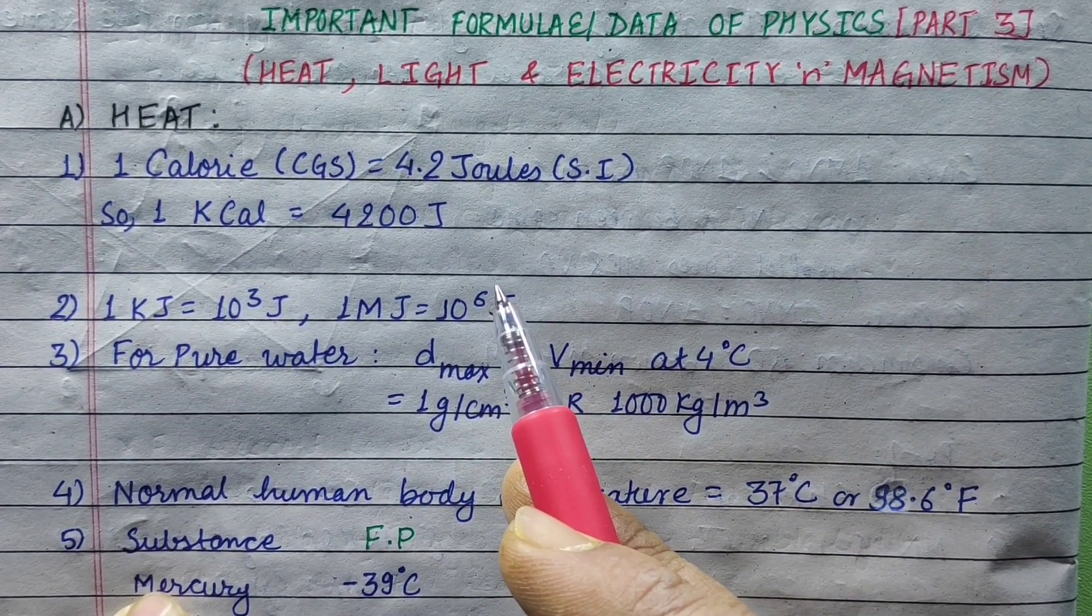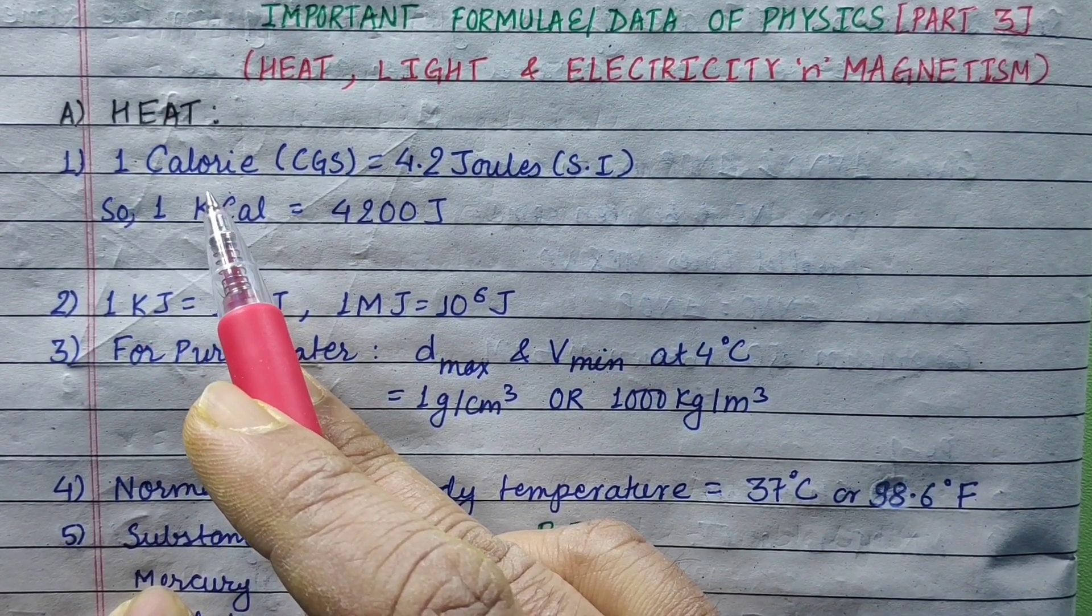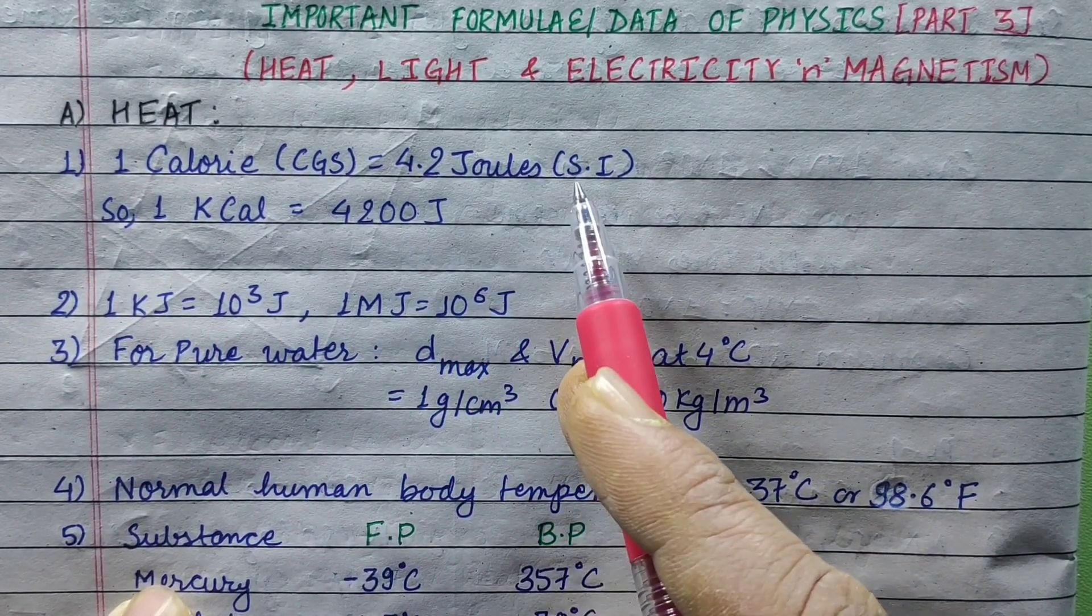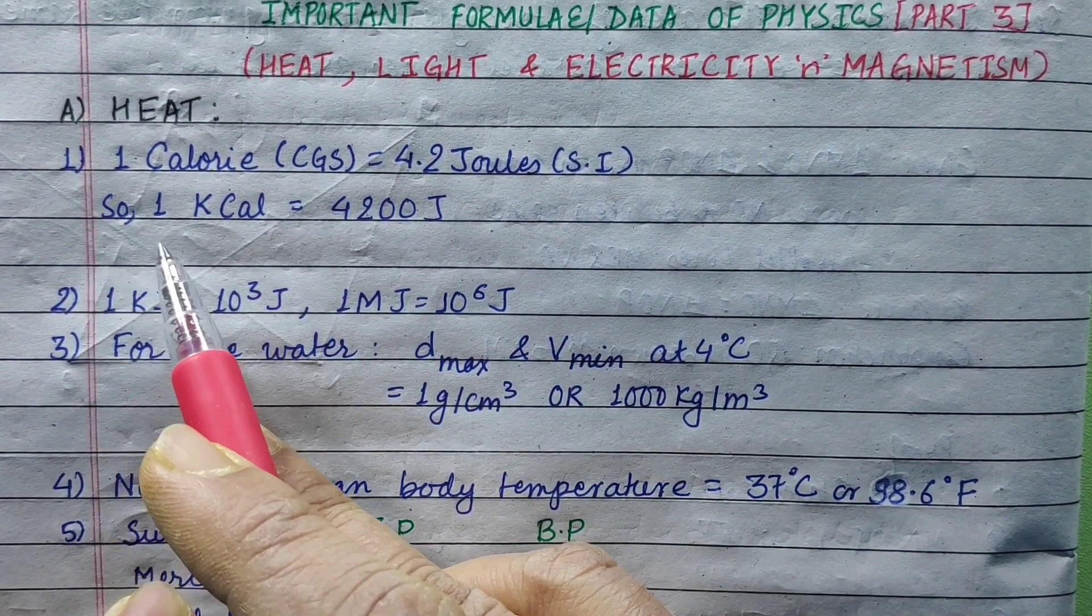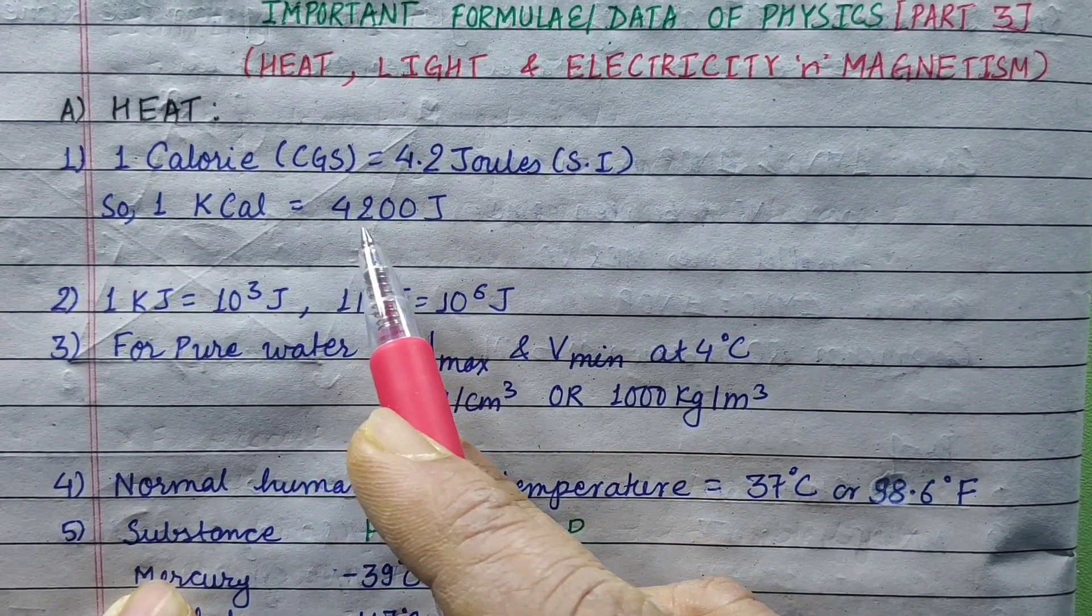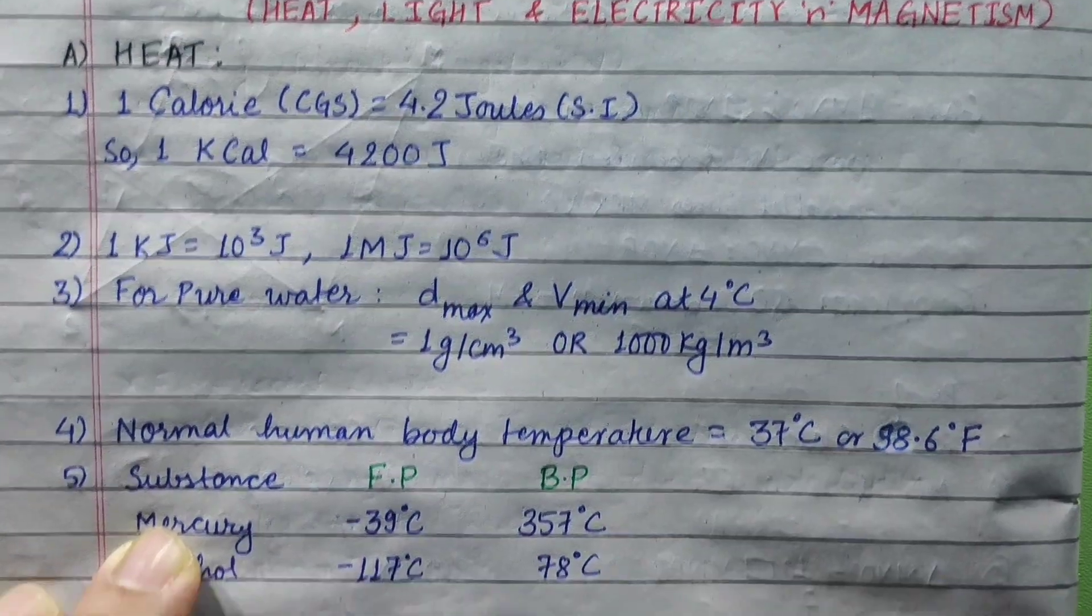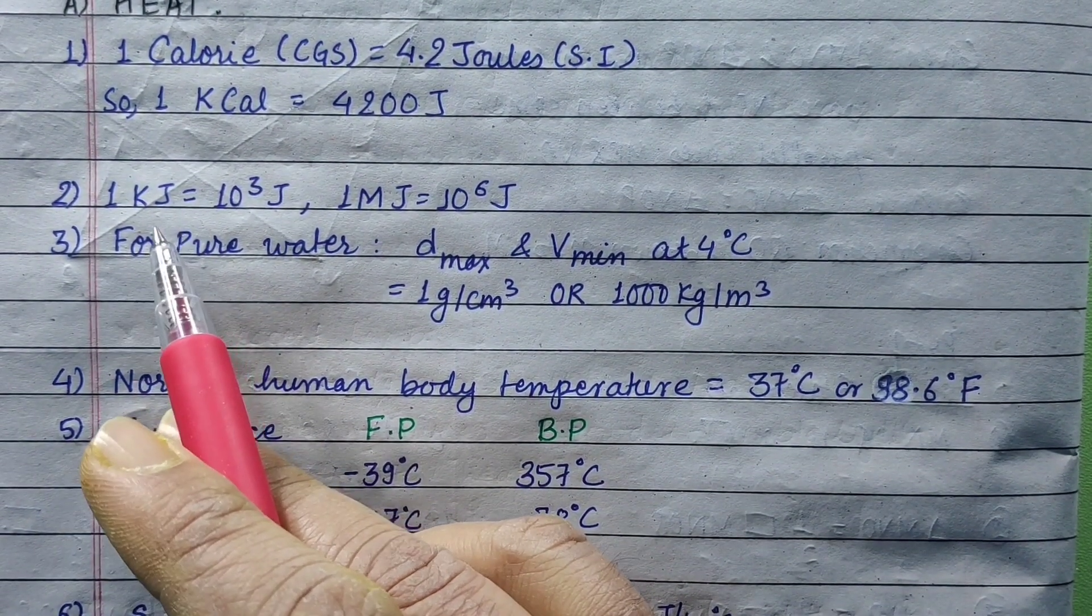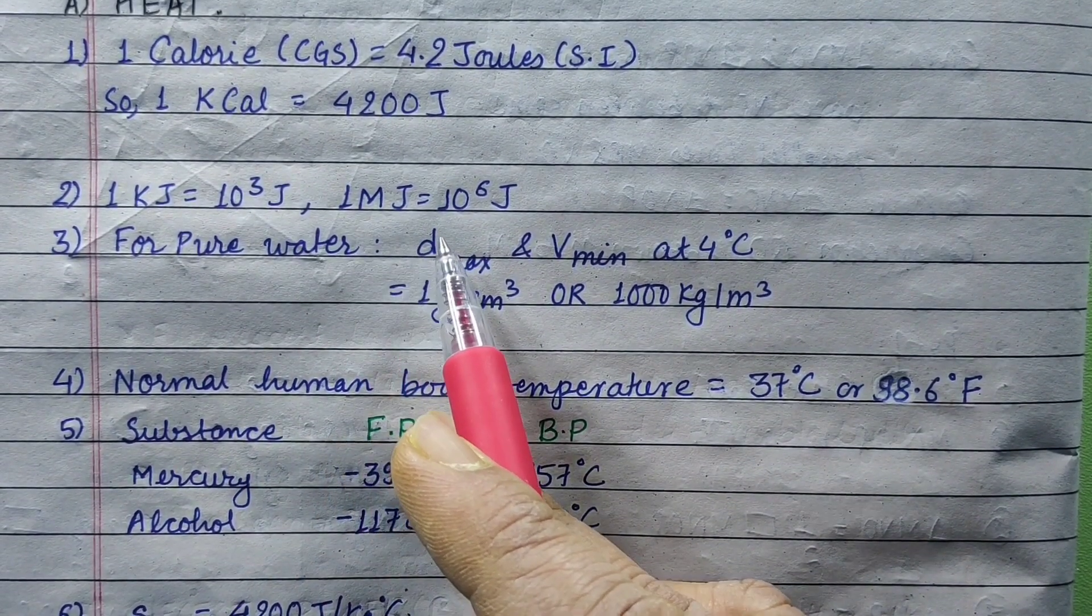In the heat chapter, 1 calorie equals 4.2 joule. This is the unit of heat. 1 kilocalorie, which is 1000 times more, equals 4200 joule. This is the higher unit of heat energy. 1 kilocalorie equals 10 to the power 3 joule. 1 megajoule equals 10 to the power 6 joule.